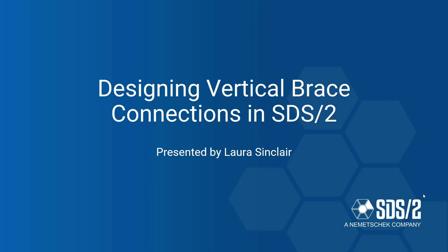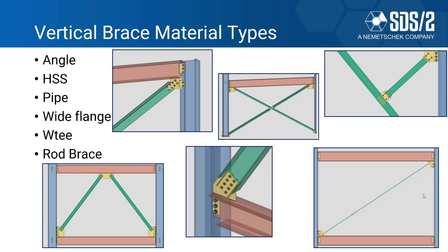Please type your questions in the questions area and at the end we'll do a live Q&A. We have over 650 connection types supported for vertical bracing — these include angle, HSS, pipe, wide flange, rod brace, and WT material types. They automatically check the entire connection joint for erectability, and SDS 2 is the only software you need to design and model these and many other steel connections. There's no need for third-party connection design software.